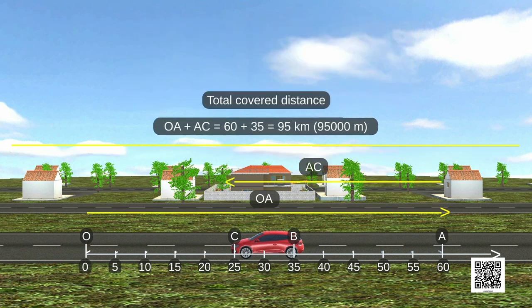So, total distance covered by the car equals OA plus AC equals 60 plus 35 equals 95 kilometers.